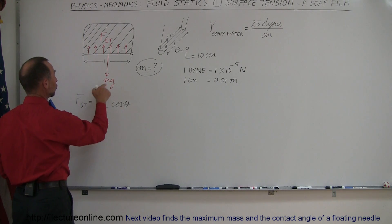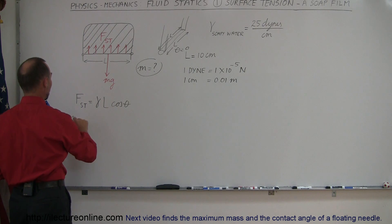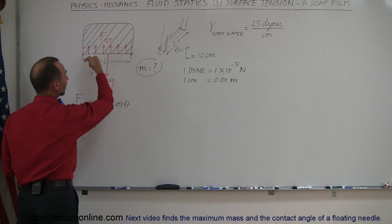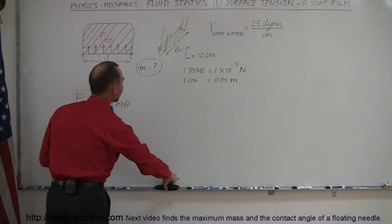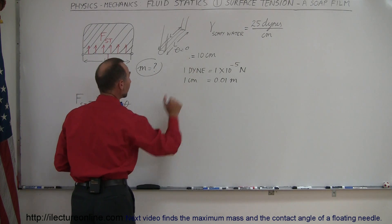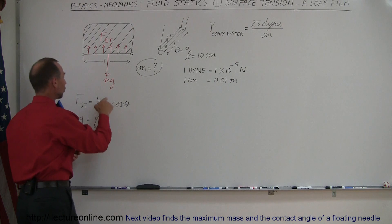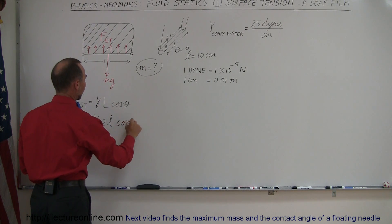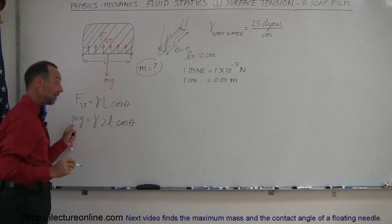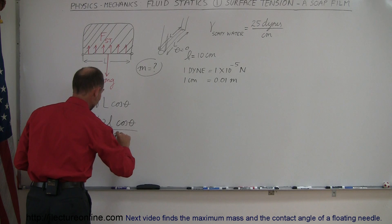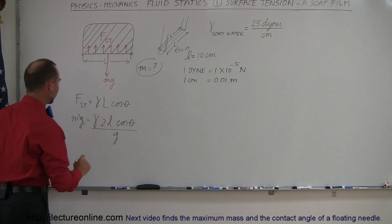Alright, so the force of the surface tension should equal the weight. So we can say mg is equal to the coefficient times the total length. So it would be this length plus the length on the other side. Just so that we don't confuse things, let me call this small l. There we go. So that means the total length is two times the length of the wire times the cosine of theta. Now since we're looking for m, we're going to divide both sides by g. And now we can find out what the mass of that little wire is equal to.